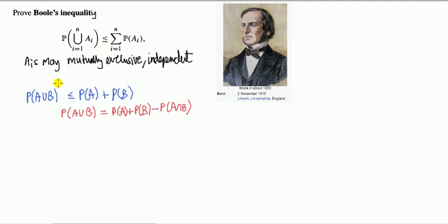Let's give you an example of what this is saying. Suppose I've got two events, say A and B. So what is the probability of A union B? This result says less than or equal to probability of A plus probability of B.